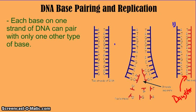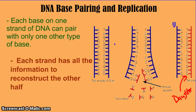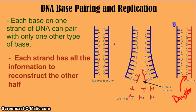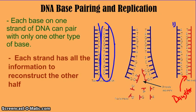Here's how the base pairing rule factors into that. Each base on one strand of DNA can pair with only one other type of base. A can only bond with T, T can only bond with A, G can only bond with C, and so on. So because that is true, each strand — if you think of DNA as a double strand, a double helix — each strand by itself has all the information to reconstruct the other half.